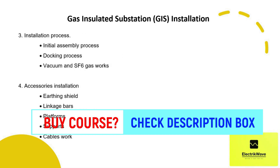We will discuss about installation process by covering initial assembly process, docking process, and vacuum and SF6 gas works. Then we will discuss accessories installation by covering earthing shield, linkage bars, platforms, supports, and cables work.